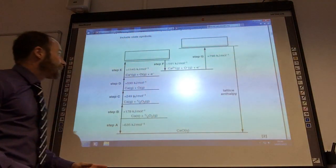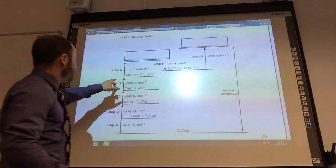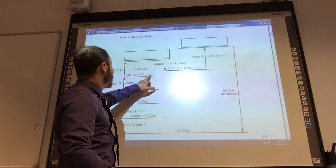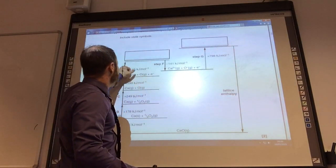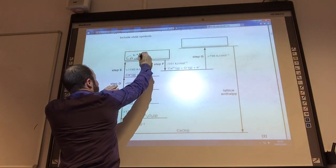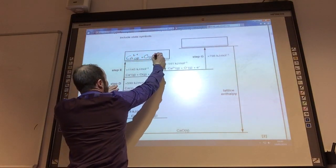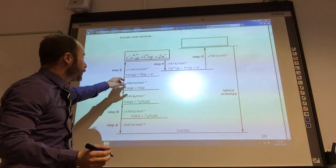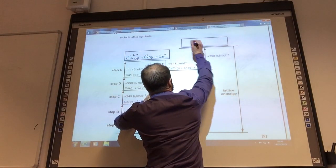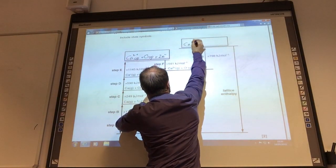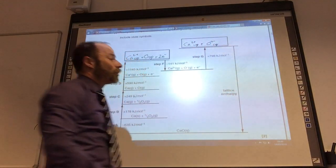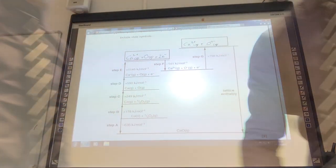Now we need to do our Born-Haber cycle. Let's have a look. We've got to fill in the boxes. Calcium 2+ plus oxygen with one electron. This is the second ionization energy of calcium to give me calcium 2+ gaseous state plus oxygen gas plus two electrons. This is my first electron affinity of oxygen. This is the second electron affinity of oxygen to give me my gaseous ions. And then that, of course, is my lattice enthalpy going down there.